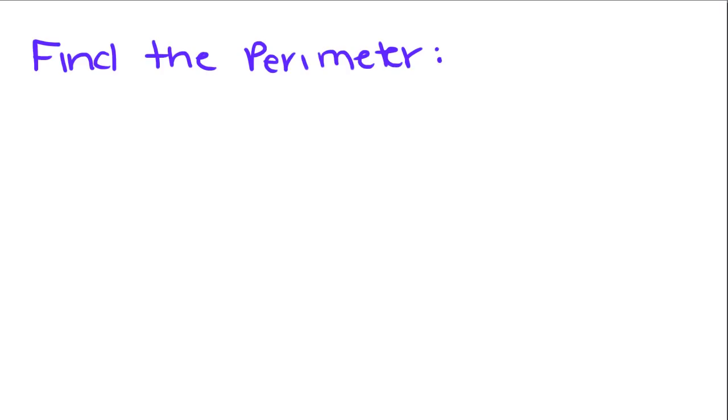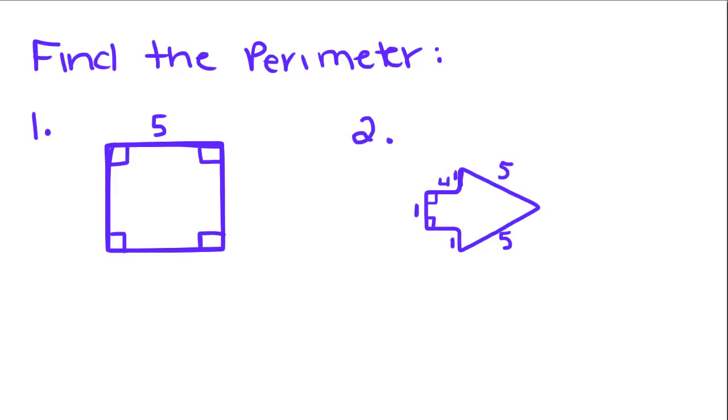Now, we're going to do some examples. Find the perimeter of these polygons. If you look at this polygon, it has 4 right angles. Opposite sides are parallel. That means it's a square, and the opposite sides are congruent. And because it's a square, that means all sides are congruent. So, every one of these sides has a measure of 5.